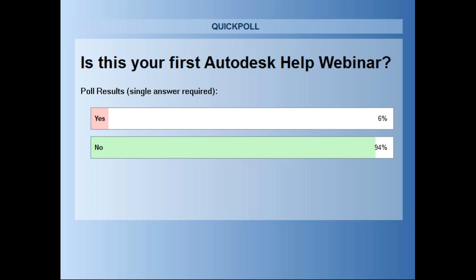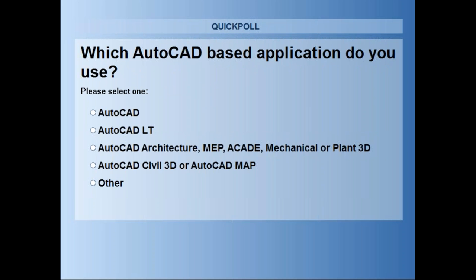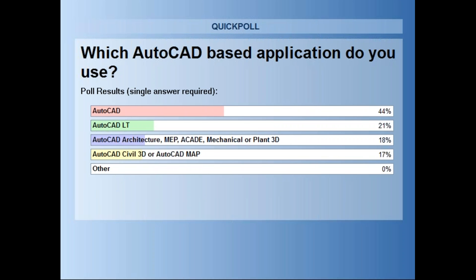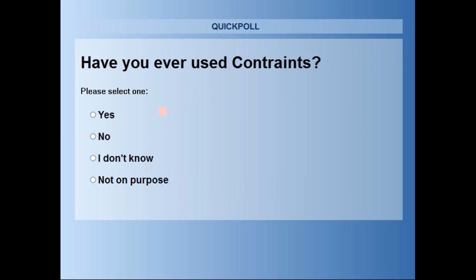The next poll is: which AutoCAD-based application do you use? About 40% are using AutoCAD, some with AutoCAD LT at about 23%, AutoCAD Verticals like MEP and AutoCAD Architecture at about 18%, and AutoCAD Civil 3D or AutoCAD Map at about 17% — a nice mix. The third poll: have you ever used constraints? About 34% have, 42% have not, 19% don't know, and about 3% not on purpose. So you're in for a real treat with Dave's presentation today.